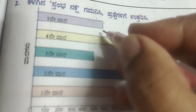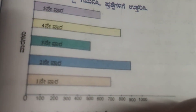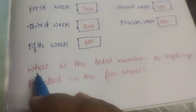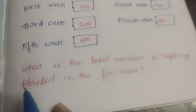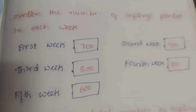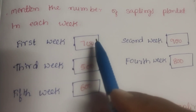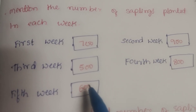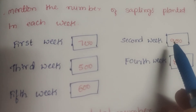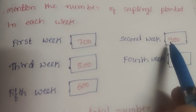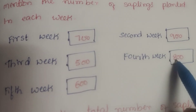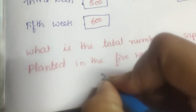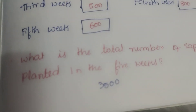Fifth week is 600 saplings. The total number of saplings planted in five weeks: 700 plus 900 plus 500 plus 800 plus 600 equals 3500 saplings total.